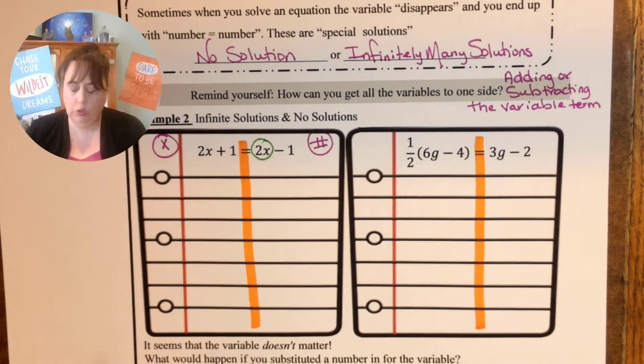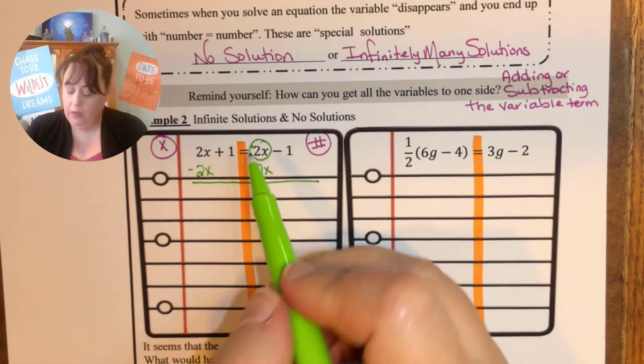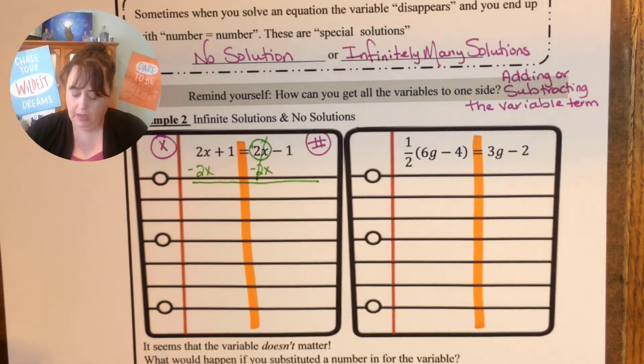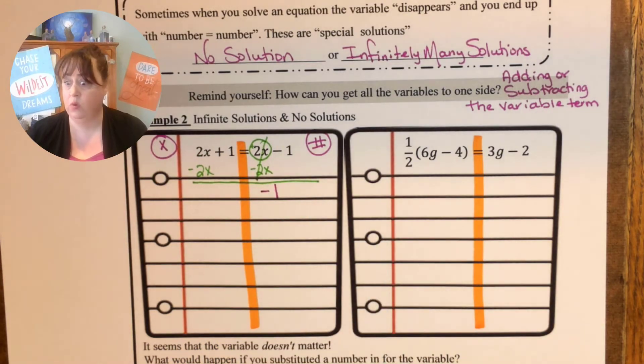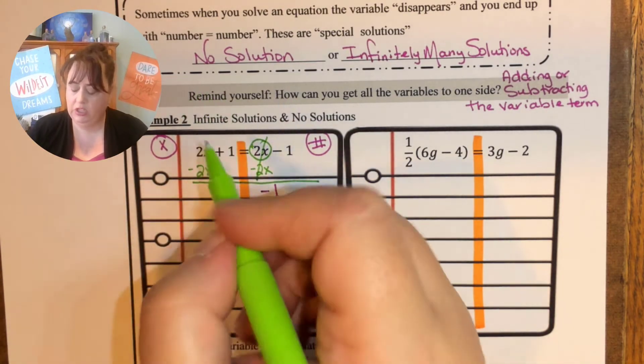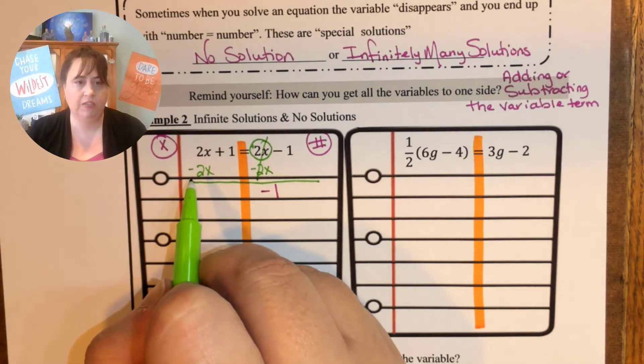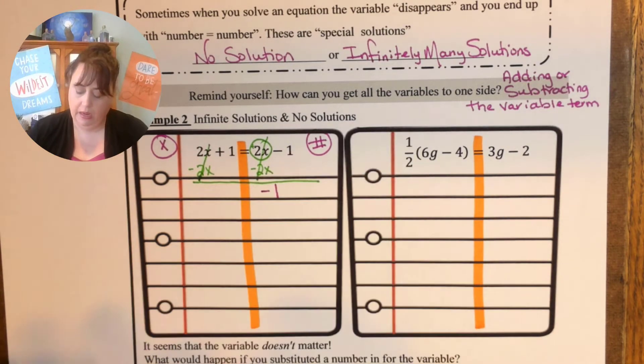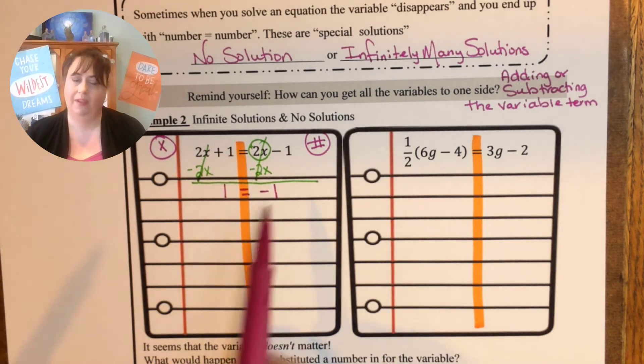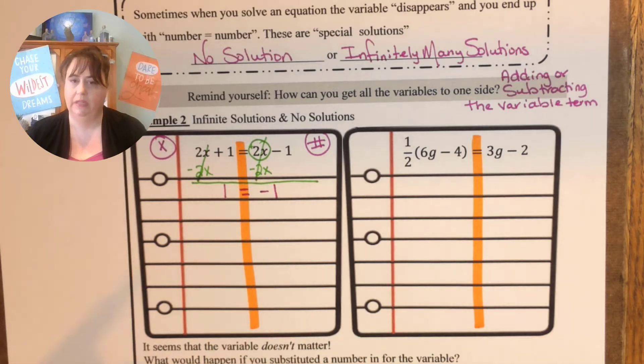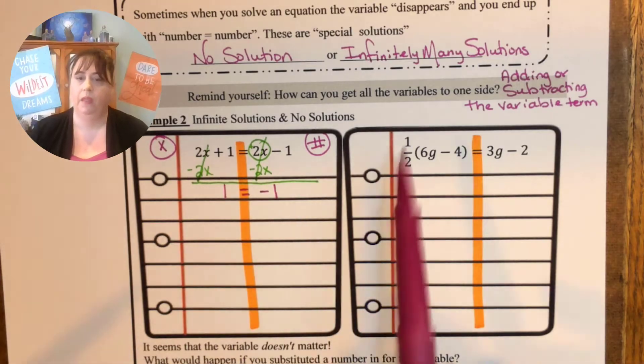So I'm getting rid of that 2x. The opposite of a positive 2x is a negative 2x. So 2x minus 2x and I am left with a negative 1. On this side, remember we said things were going to disappear, so 2x minus 2x that disappeared too. It wasn't my intention to make it disappear but it did and I'm left with a 1. We're going to come back to that. Let's come over here and do this problem.